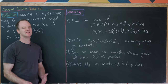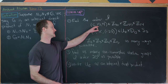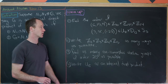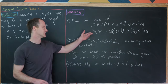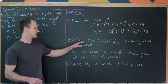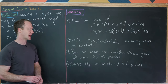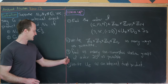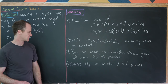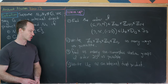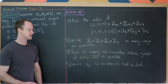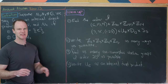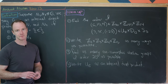Here are four warm-ups. First, find the order of (6, 15, 4) in Z30 cross Z45 cross Z24. Second, find the order of (3, sr, (1 2 3)) in U7 cross D12 cross S3. Third, write Z2 cross Z3 cross Z4 cross Z5 as many ways as possible using the theorem. Fourth, find as many non-isomorphic abelian groups of order 20 as possible. Bonus: write U15 as an internal direct product, then express it as Z_something cross Z_something.